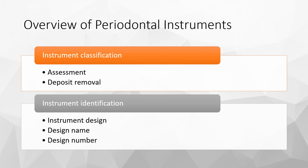Each instrument can be identified at a glance by the design. Popular instruments are usually named after institutions, like your UNC-15, which is from the University of North Carolina Chapel Hill. The TU-17 Explorer was named after Tufts University, and the ODU-1112 was named after Old Dominion University. Other instruments are named after individuals — that includes your Gracey curettes and your Nevite scalers. Instruments are designated by a number followed by the design name, and the number indicates the specific design of the working end.